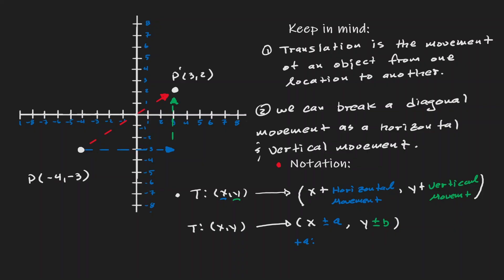If a is positive, we're saying that we're moving to the right. If a is negative, we say that we move to the left. If b is positive, we say that we're moving up. And if b is negative, we say that we're moving down.